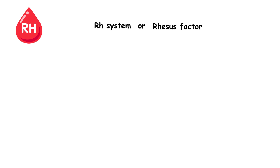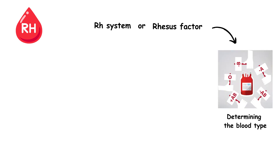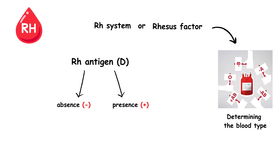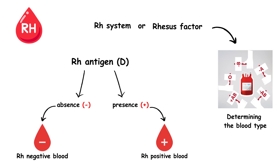Another main system that exists for blood type is the RH system. The RH system, or rhesus factor, is another critical element in blood typing. It refers to the presence or absence of the RH antigen, also known as the D antigen, on red blood cells. If a person has the RH antigen, they are called RH positive, and if a person lacks this antigen, they are called RH negative.